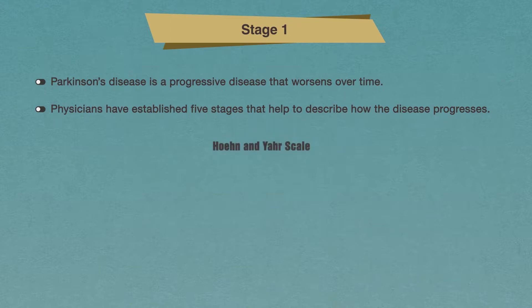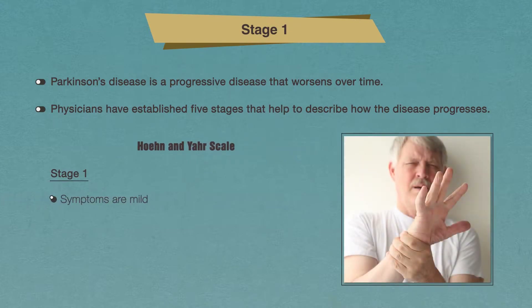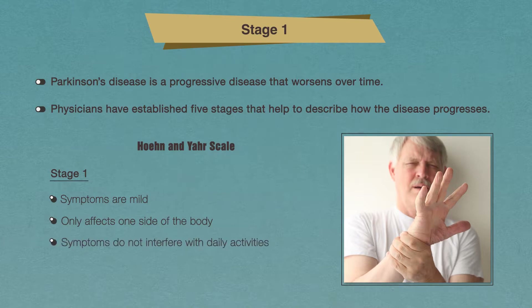These stages are known as the Hoehn and Yahr scale and are widely used by physicians throughout the world to help classify their patients. Stage one is the initial stage of Parkinson's disease, where the symptoms are mild and only present on one side of the body. The symptoms in this stage do not usually interfere with daily activities and are generally mild enough to not need medical attention. If you decide to consult with a doctor at this stage, they may be unable to make a diagnosis. Symptoms at stage one may include tremors or rigidity.